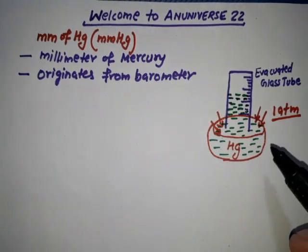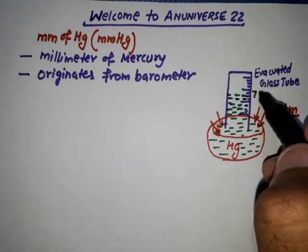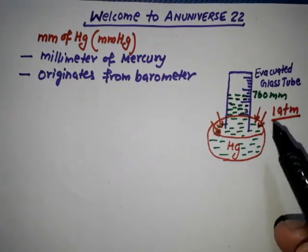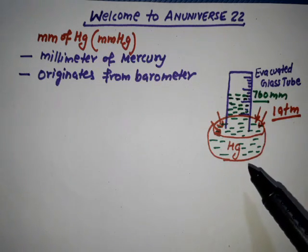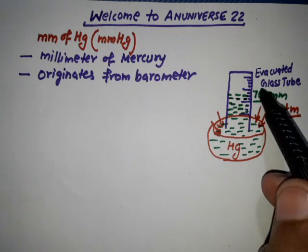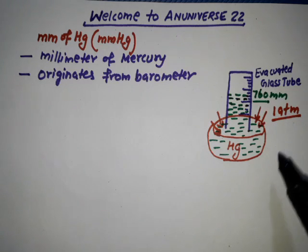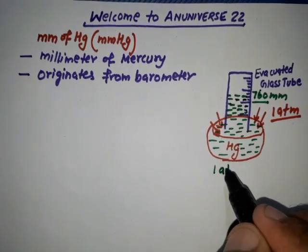The mercury rises in the barometer to 760 mm. This is the height of mercury that rises in the barometer at one atmospheric pressure. So we can say one ATM is equal to 760 mm of mercury.